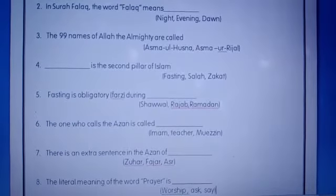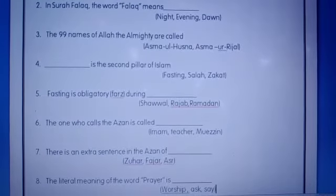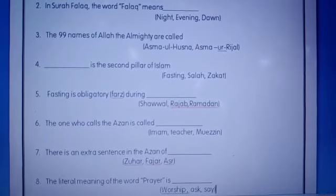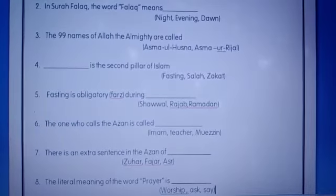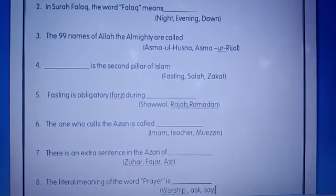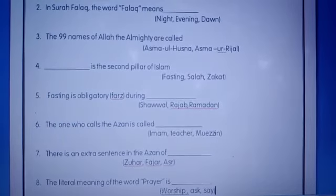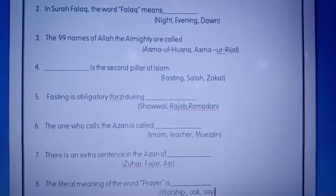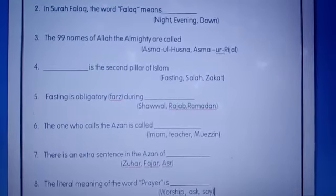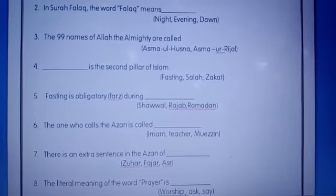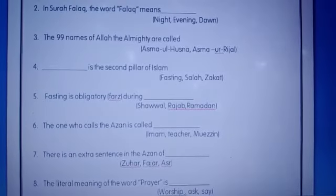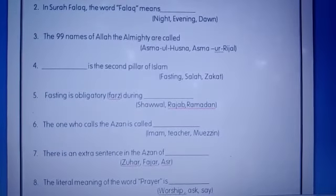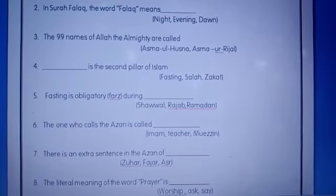Number four: dash is the second pillar of Islam — fasting, salah, or zakat. As you all know, salah is the second pillar of Islam. Number five: fasting is obligatory first during — Shawwal, Rajab, or Ramadan. The correct answer is Ramadan.